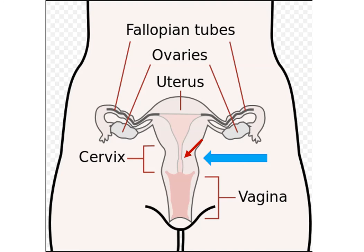The length of this canal varies in length or width throughout a woman's lifetime. At its widest, the cervical canal measures 8 mm in diameter. The side that opens up into the uterus is called the internal os, and the opening that faces the vagina is called the external os.